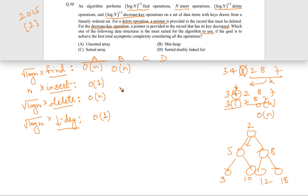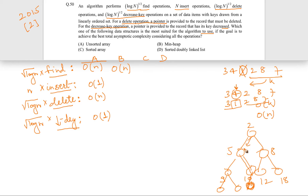Insert in a min-heap is more efficient. When inserting a new element, you place it at the end and then compare it with its parent along the path to the root, swapping as needed to restore the heap property. In the worst case you traverse the full height of the heap, which is O(log n).